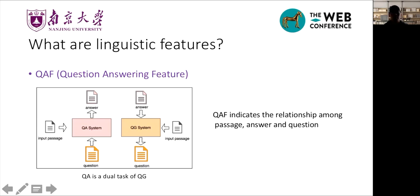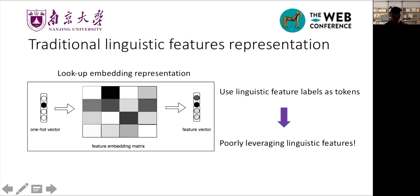Although linguistic features carry much information that is useful for generating questions, existing linguistic features representation cannot fully exploit this power. As far as we know, almost all the existing approaches of utilizing linguistic features are the same. They use a trainable matrix to transform the discrete feature labels into vectors, which is the same as the traditional word embedding. We call this method lookup embedding representation. Obviously, this means has at least two drawbacks.